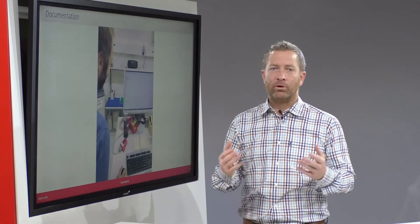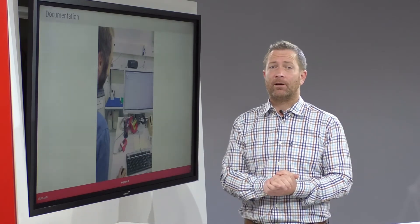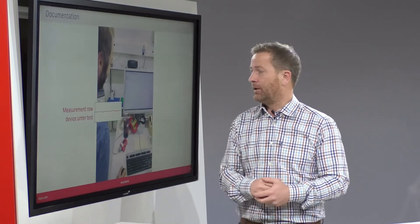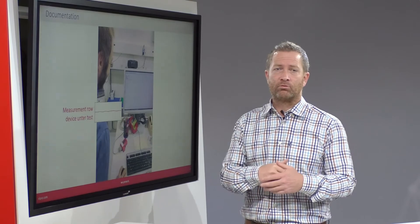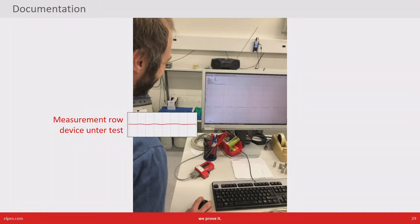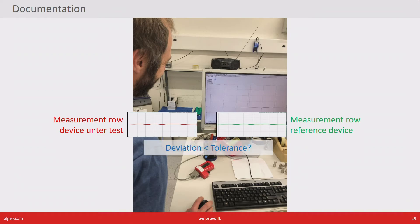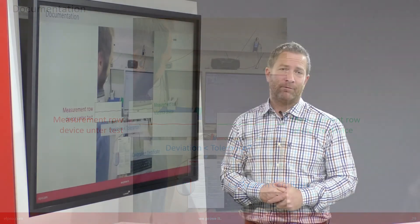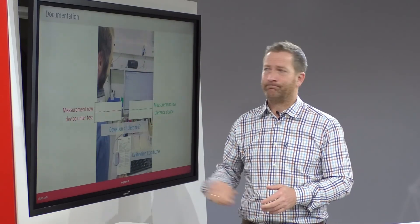As already mentioned, we simply compare the measurement readings of the device under test with the measurement readings of the reference. If the deviation is smaller than the tolerance, we issue the calibration certificate. Thanks for watching.